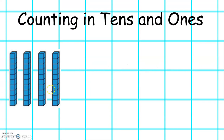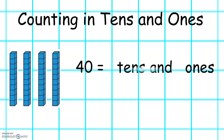Let's look at this one. We've got 10, 20, 30, 40. So 40 equals — how many tens? Well done. There are four tens. And how many ones can you see? Excellent. There are zero ones.